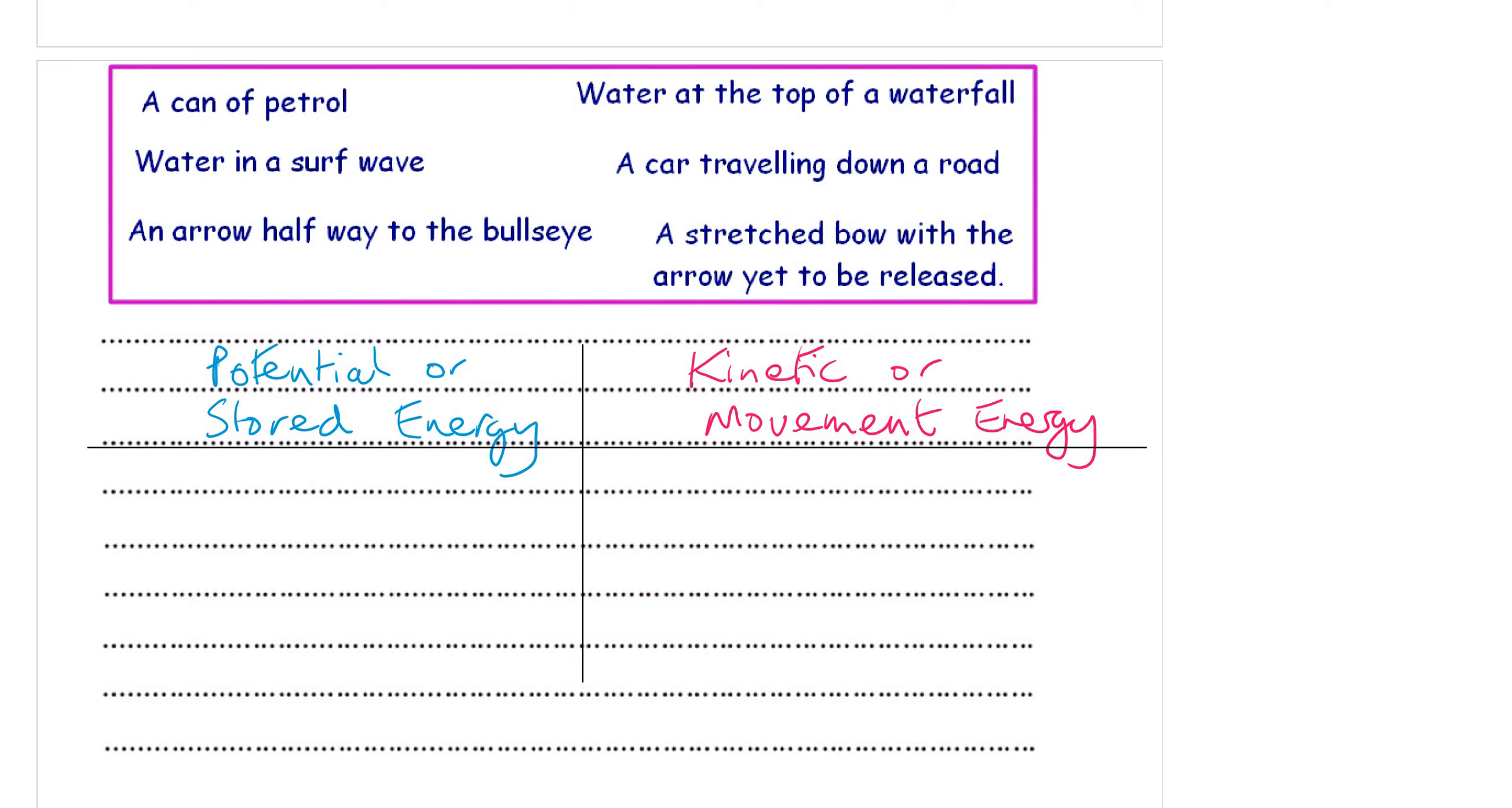Hello, year sevens. It's the energy booklet, lesson six. We've just got to go over homework two, which was to construct a table with the following headings: potential or stored energy and kinetic or movement energy. We've got two columns here. So let's have a look at this.